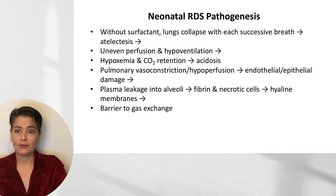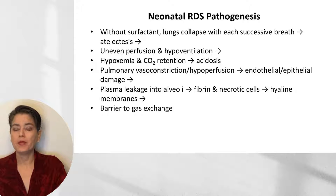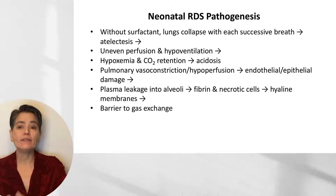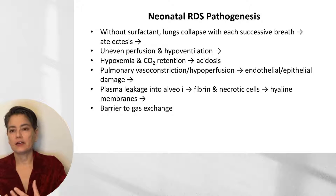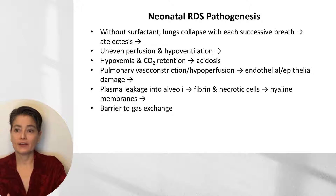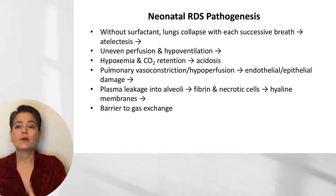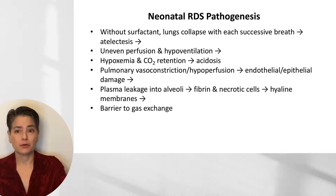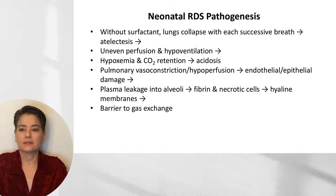In response to this respiratory acidosis, we get pulmonary vasoconstriction and hypoperfusion, resulting in downstream endothelial and epithelial damage. Plasma leaks into the alveoli, forming a gummy mess of fibrin and necrotic cells — these hyaline membranes create an additional barrier to gas exchange. Even without the hyaline membranes, we're already challenged by ventilation-perfusion mismatch and areas of atelectasis.